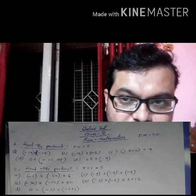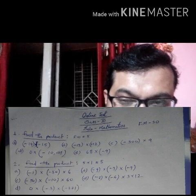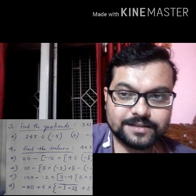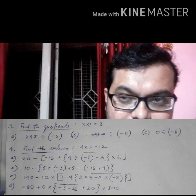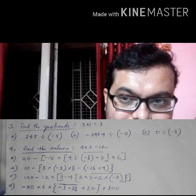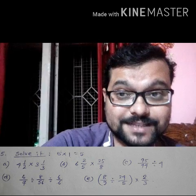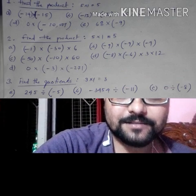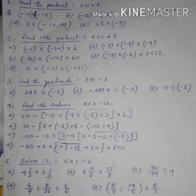Next, solve it — five questions: 4 and 1/2 multiplied by 3 and 1/3, then 6 and 2/5 multiplied by 25/8, then 95/44 divided by 4, then 6/7 divided by 8/56, divided by 6/6, then 8/9 divided by, within bracket, 24/5, then multiplied by 2/3.